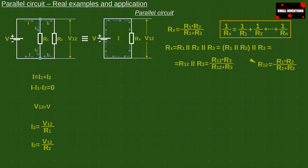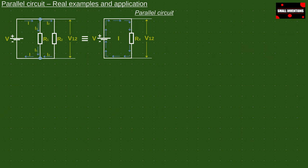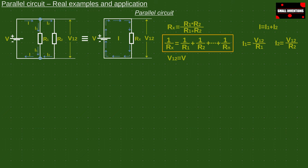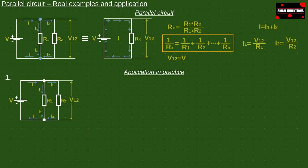That should be all you need to know about a parallel circuit, so that you can further independently calculate and design these types of circuits. Let's apply this knowledge in practice on a simple example. The supply voltage is 12 volts and the resistors R1 and R2 have values of 10 kilo ohms. It is necessary to calculate the total resistance and all currents in the circuit.